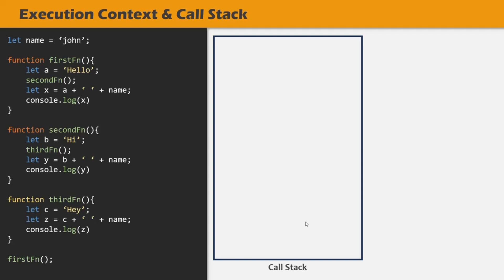In this lecture, we learned what an execution context is, what a call stack is, and how an execution context gets executed in the call stack. We did not focus on how an execution context gets created — we just learned what it is, what information it stores, and how it gets executed. In the next lecture, we'll take a deeper look at the execution context and understand how it gets created and how the information passed to a function gets stored in it. If you have any questions, feel free to ask. Thank you for listening and have a great day.